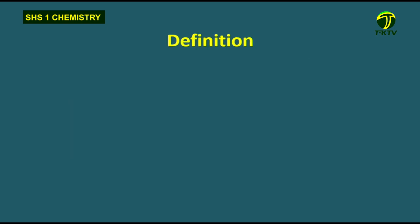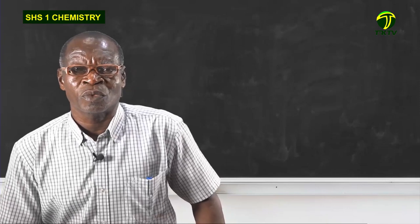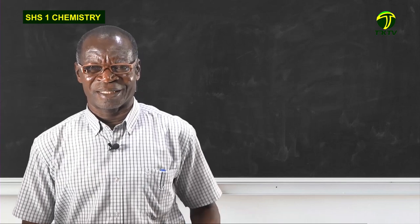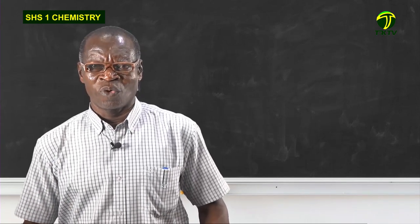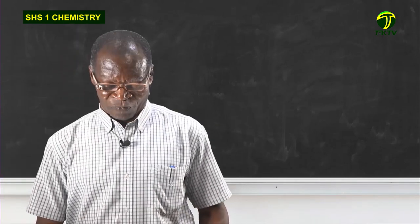We will look at some definitions. The first is: what is science? Science simply means the systematic study of nature, and chemistry is a very important branch of science. When we talk about systematic, there are certain steps that we follow to study things — we try to look at what something is, how it was formed, or what is happening.